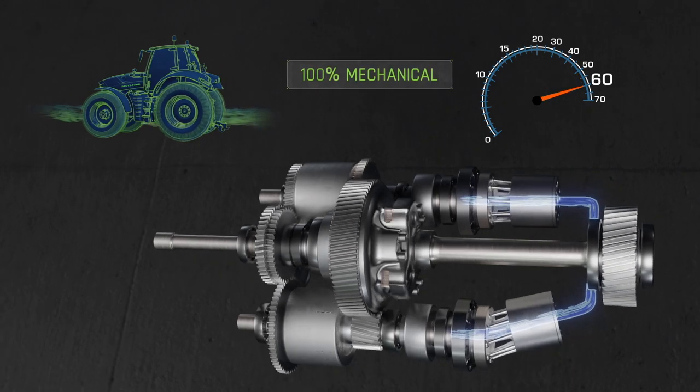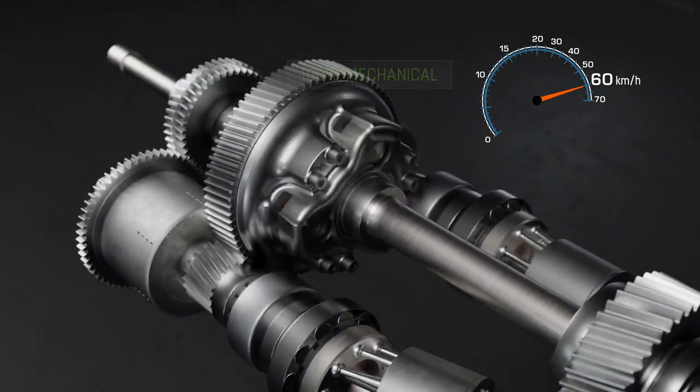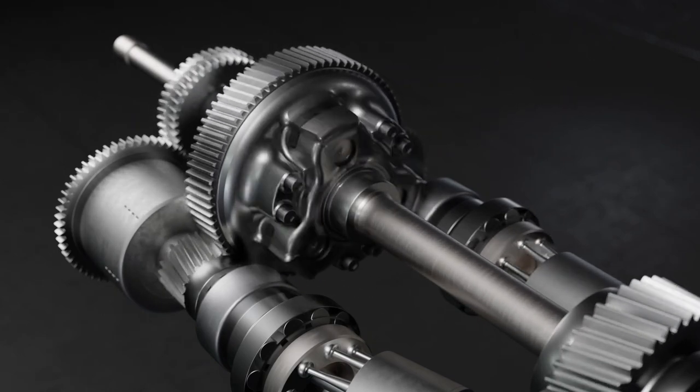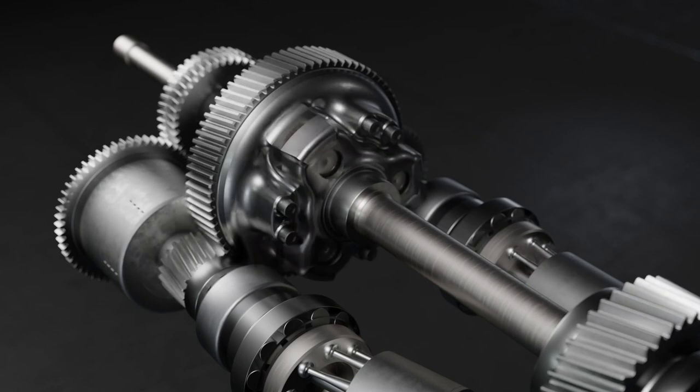This is made possible by the multi-stage planetary gear unit, which not only splits the power flow into the mechanical and hydraulic areas, but also combines them again afterwards.